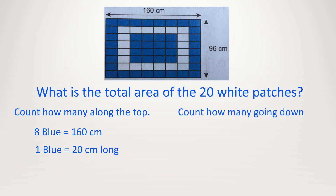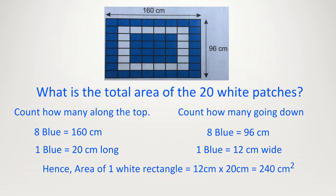96 is the width. But how many are going down? It is also 8. So 8 blue equals 96, meaning 1 blue is equal to 96 divided by 8 equals 12. We have worked out the length and width for the blue rectangle: length is 20 and width is 12. So what's the area? Length times width equals 20 times 12 equals 240.